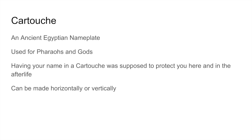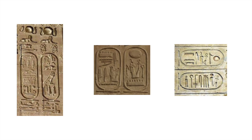The cartouche is an ancient Egyptian name plate. They only used it for pharaohs and gods. Having your name placed into a cartouche was supposed to protect you both here and in the afterlife. As you'll see in the examples, cartouches can be made both horizontally and vertically.